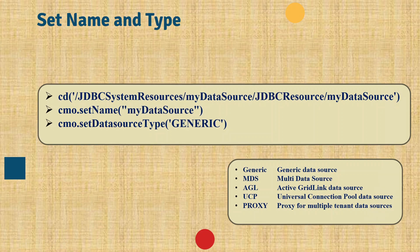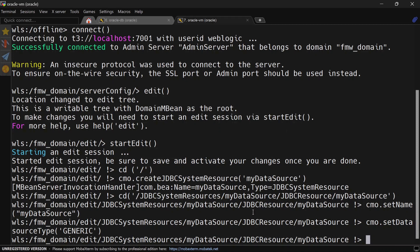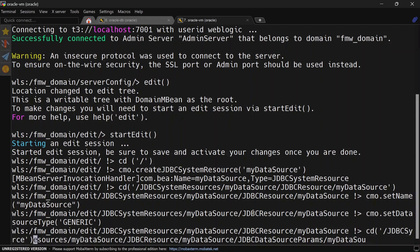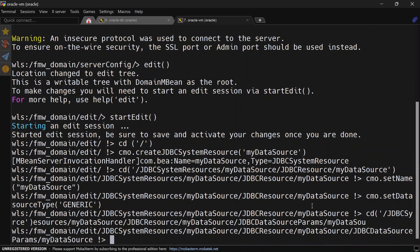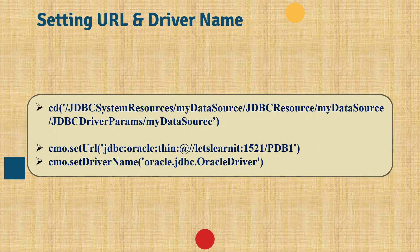The next step is to set the JNDI name. For that you go to the JDBC resource, then JDBCDataSourceParams, and set the JNDI name there. So first we cd to JDBCDataSourceParams and then we set the JNDI name to jdbc/myDataSource.